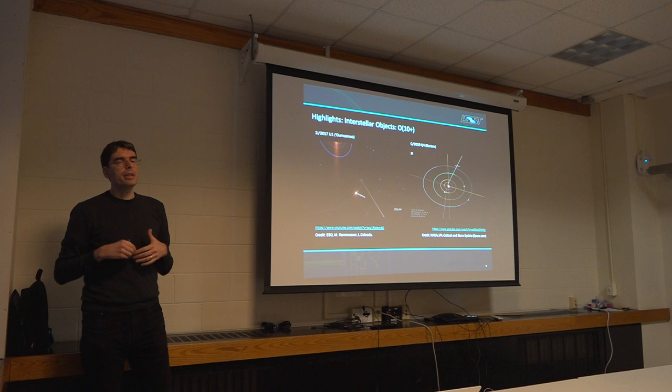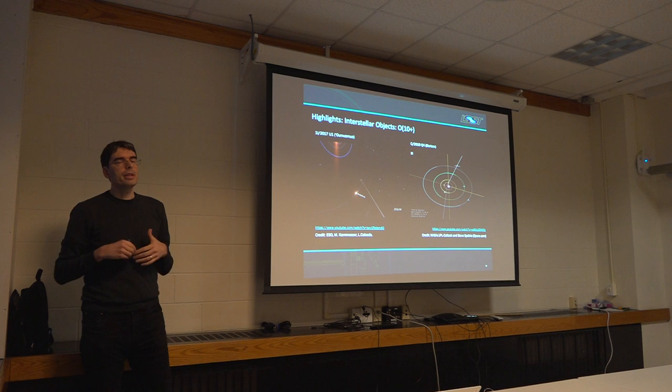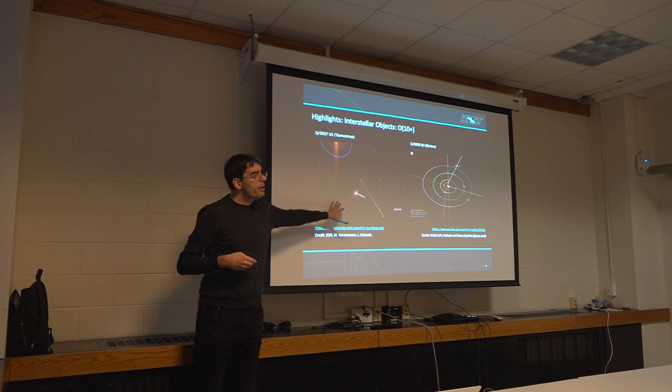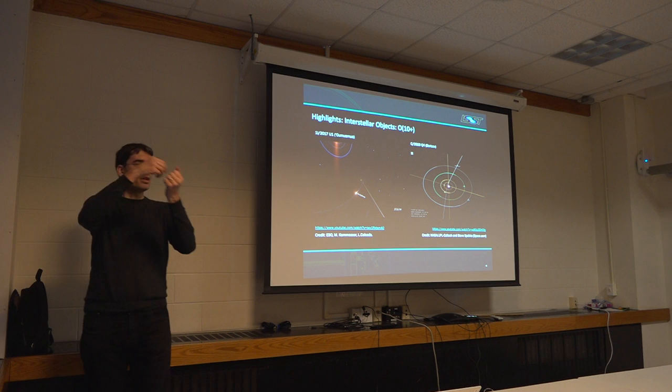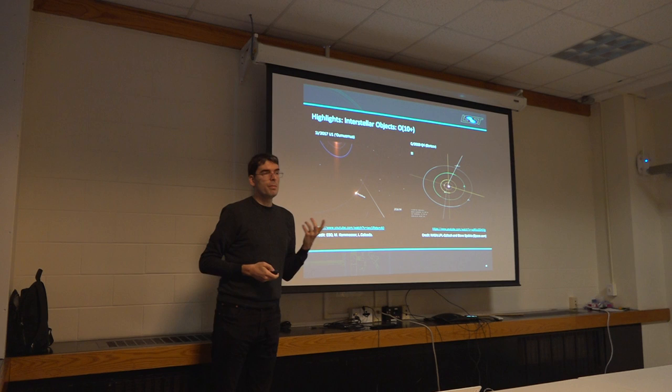So comet interceptor, the most likely destination is a comet from our own Oort cloud. However, if we get one of these that's on the proper orbit and that's close enough, you can imagine having an encounter with that object. And that would be phenomenal. We'd have in-situ measurements of an extrasolar protobody.